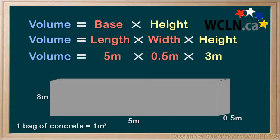We can input our values to the equation, and we find that our wall will be 7.5m cubed. Therefore, we need 7.5 bags of concrete to make it.